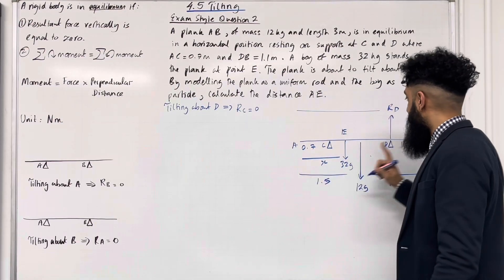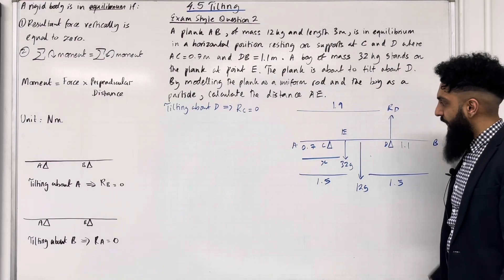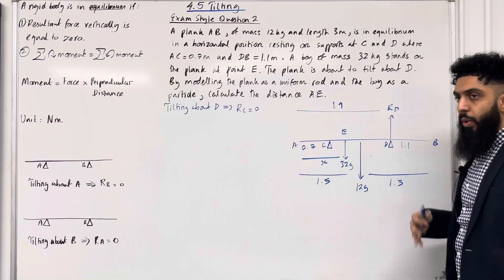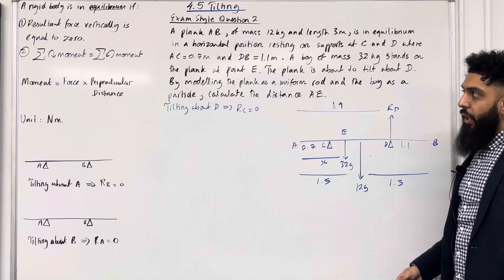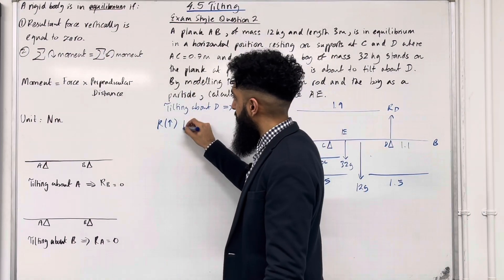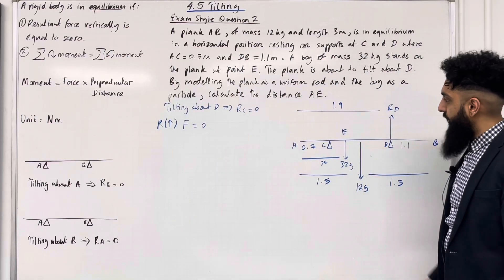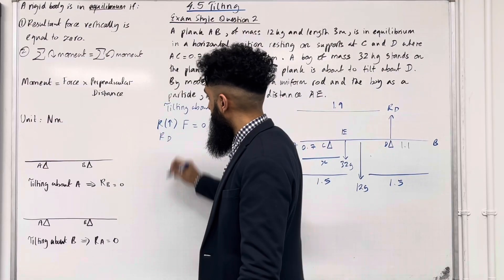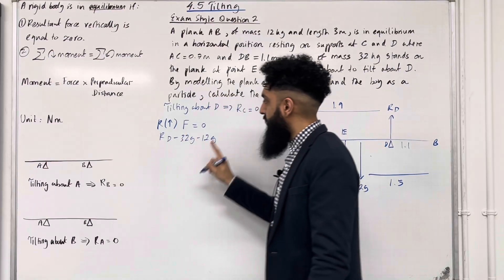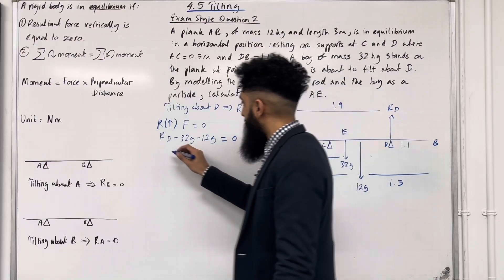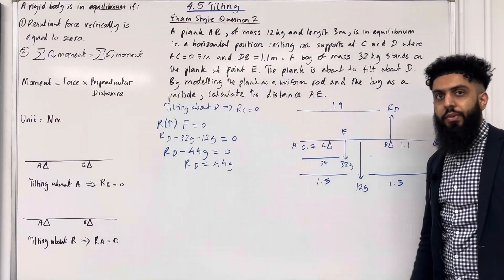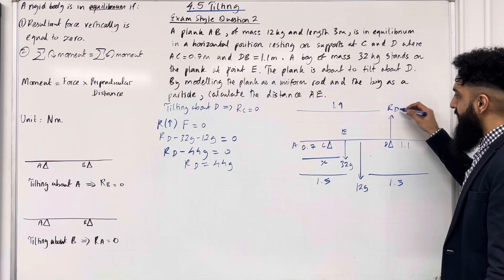That is my complete force diagram, and my target is to work out X. I'll first calculate RD using condition 1 of equilibrium — resultant force vertically equals 0. Taking upwards as positive: RD − 32g − 12g = 0, so RD − 44g = 0, hence RD = 44g.